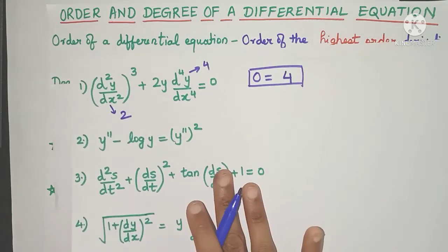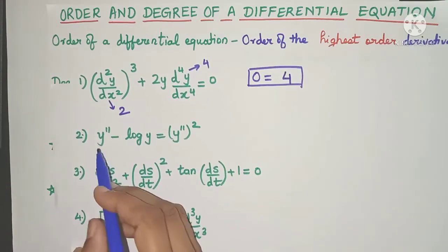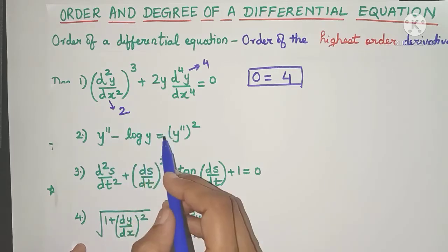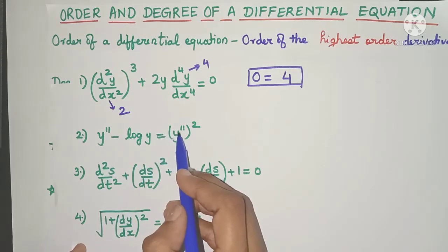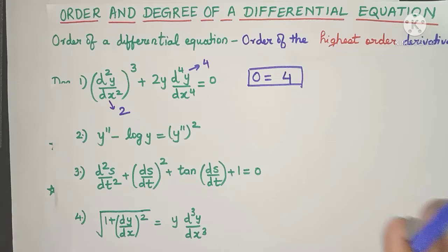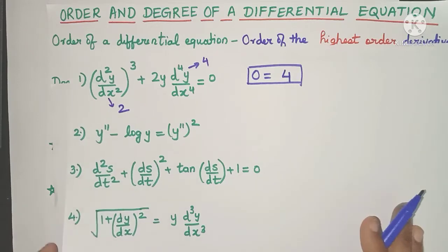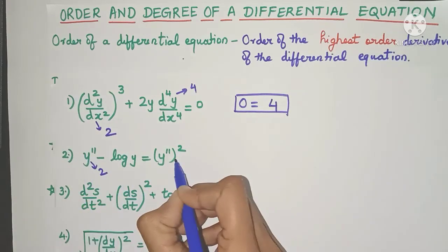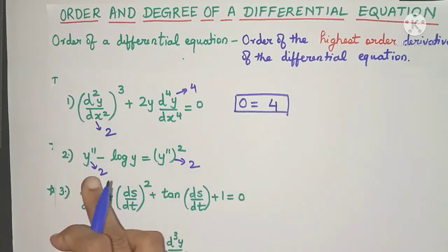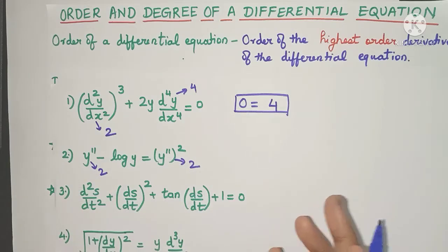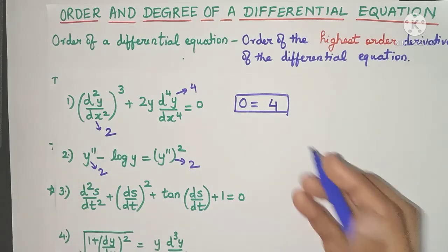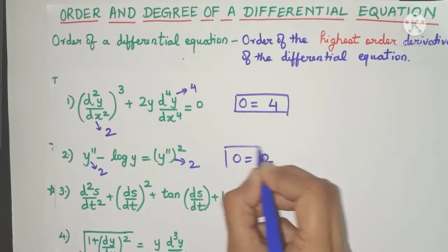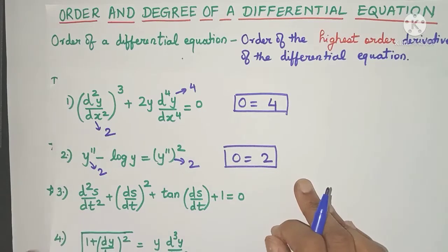In the next example, we have y'' - log y = (y'')². Applying the same rule, both derivatives are of the second order. The highest order is 2, so 2 is the order of this entire differential equation.